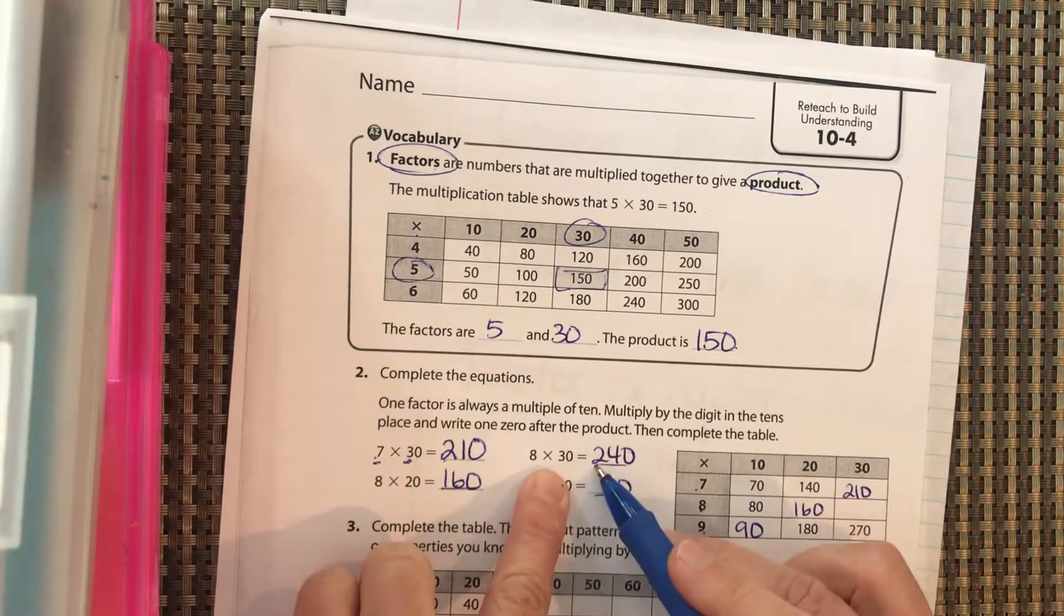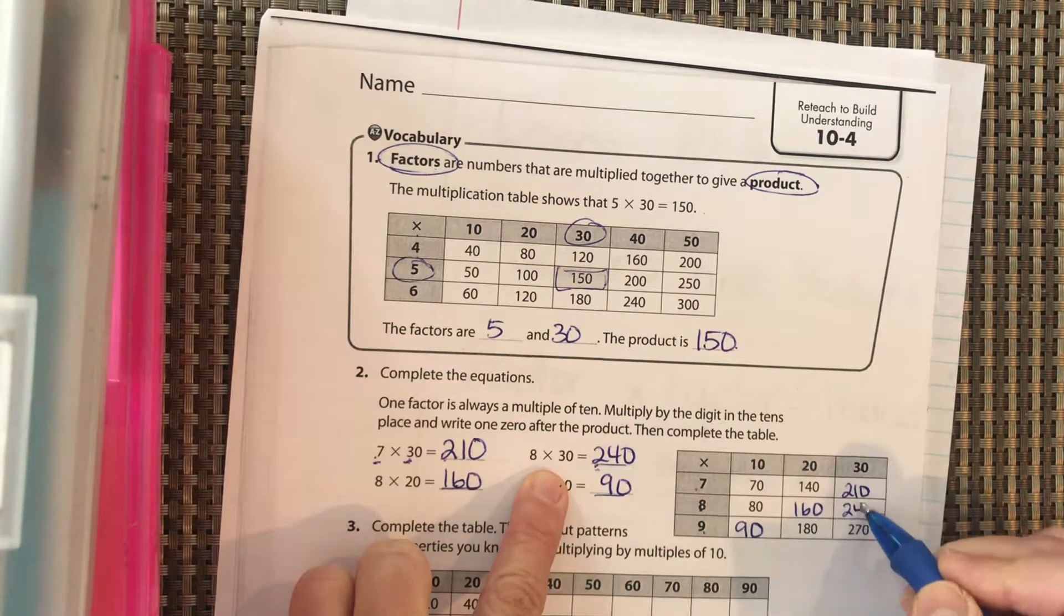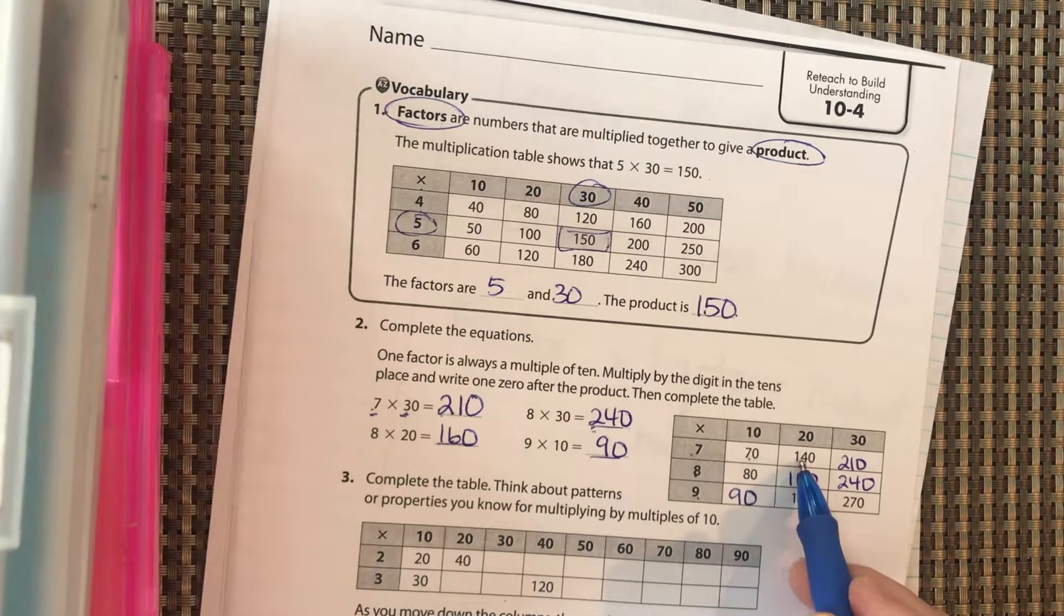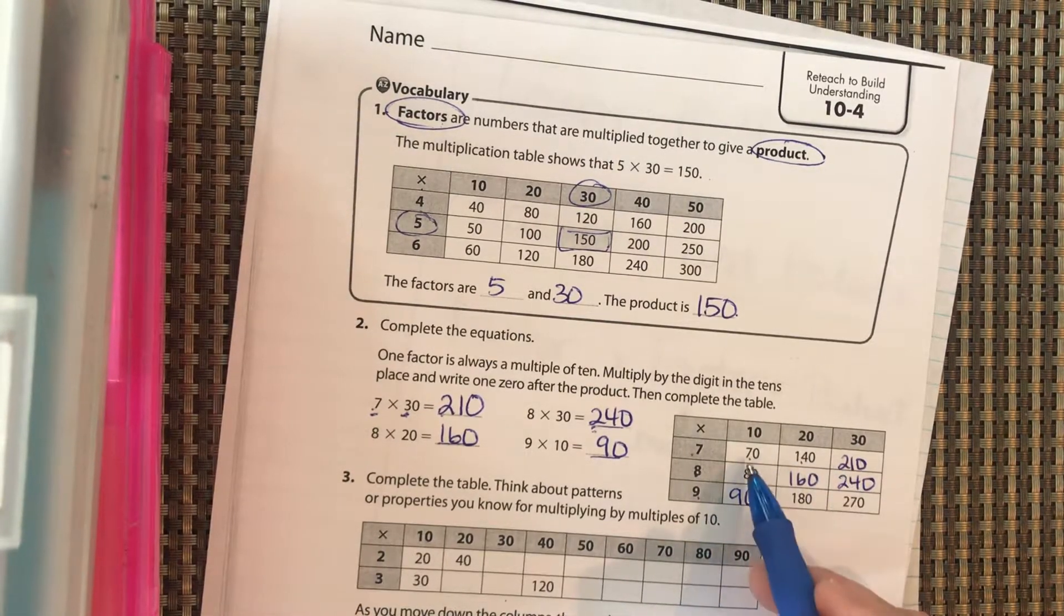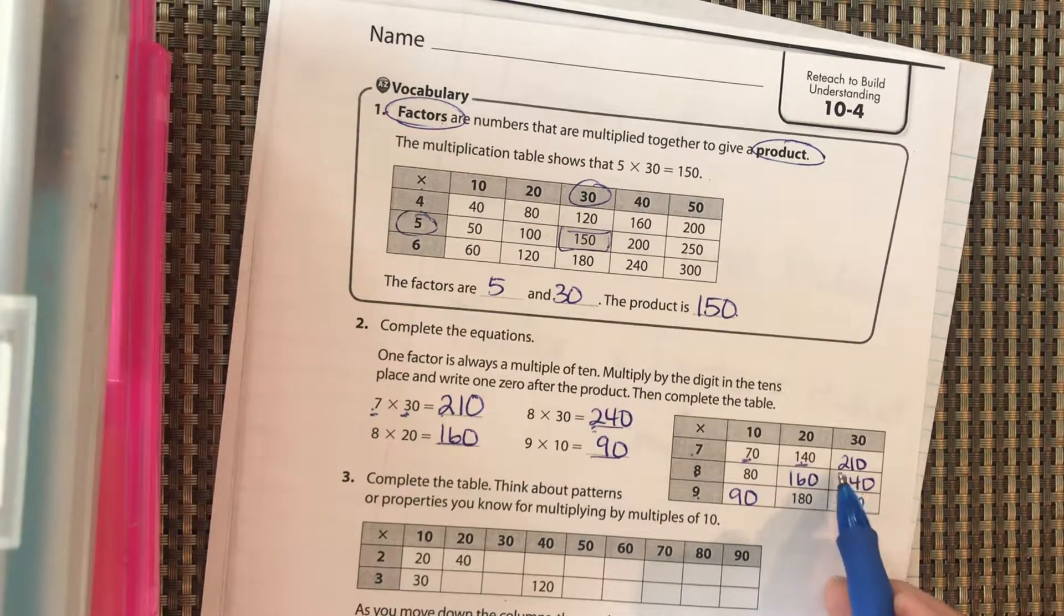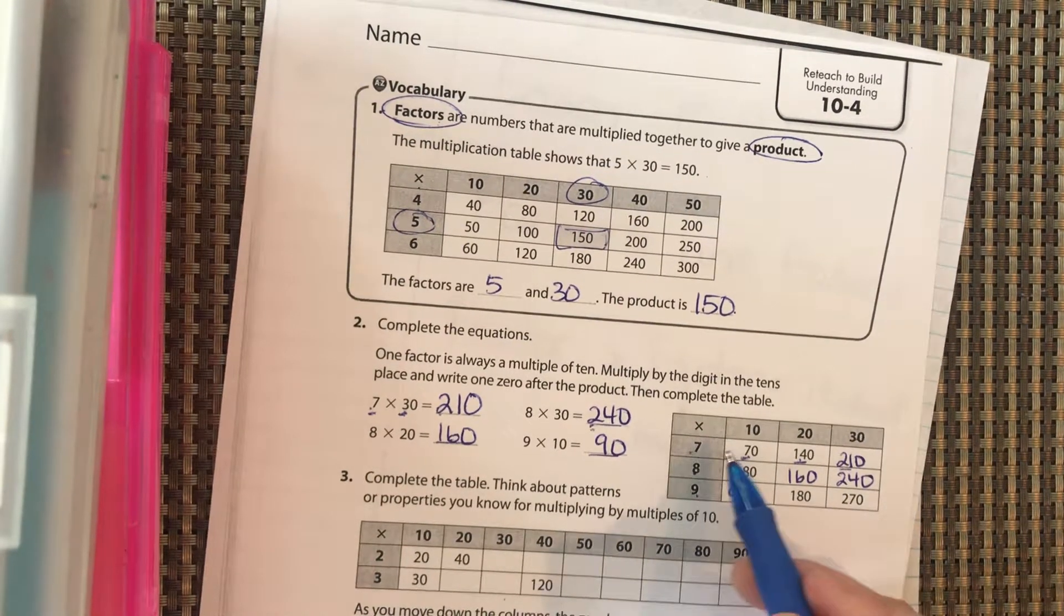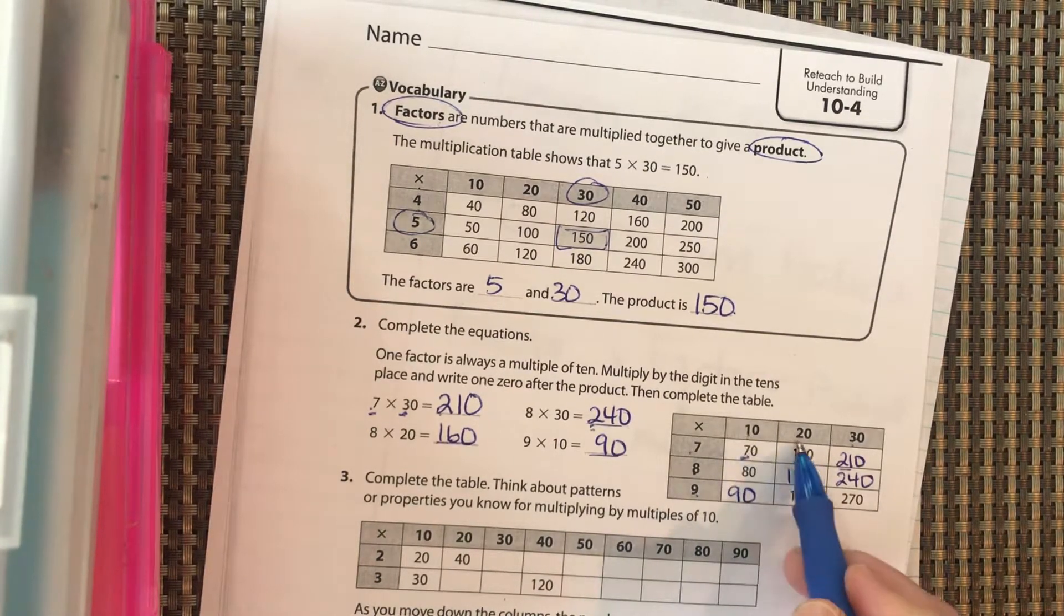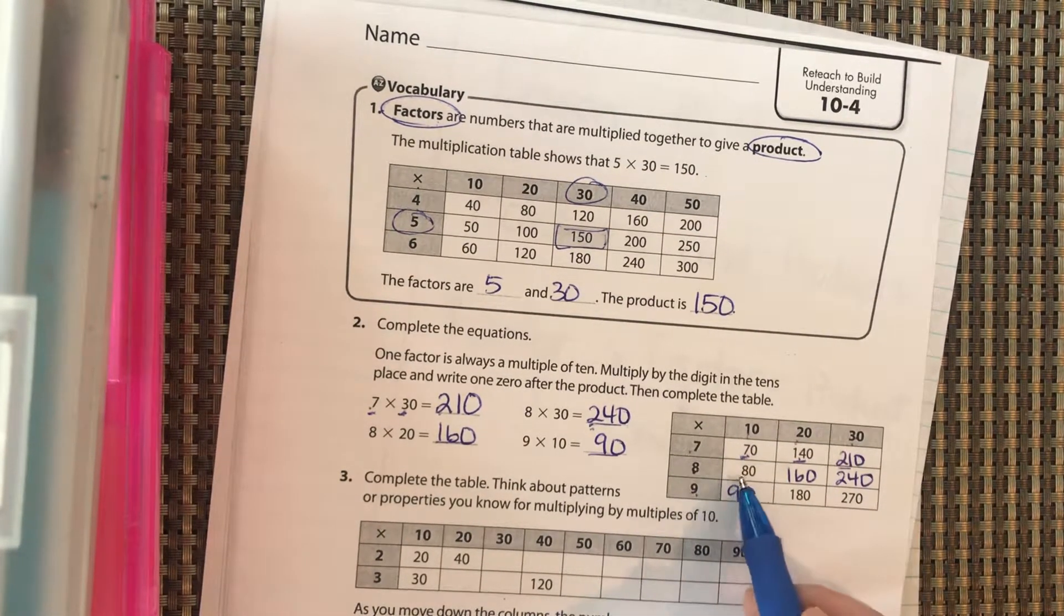Okay, so if we look at this, we have 70, 140, 210—these are multiples of seven, so seven times one, seven times two is 14, seven times three, which makes sense because it's seven times 10, seven times 20, seven times 30—times one, times two, times three.